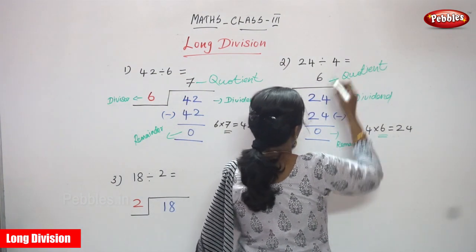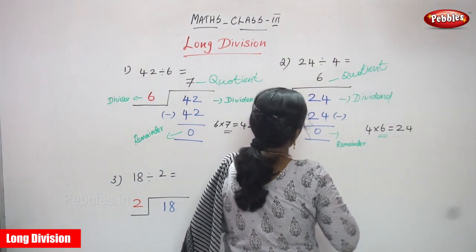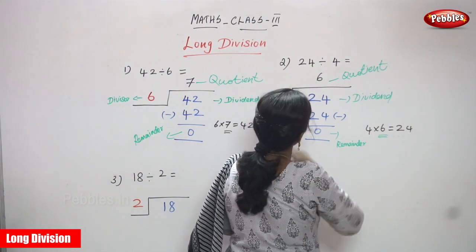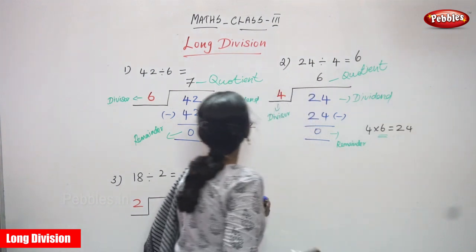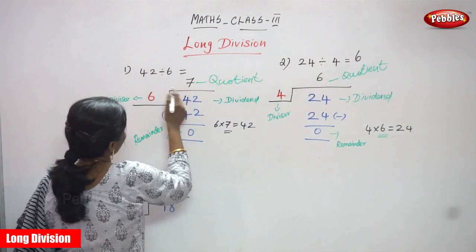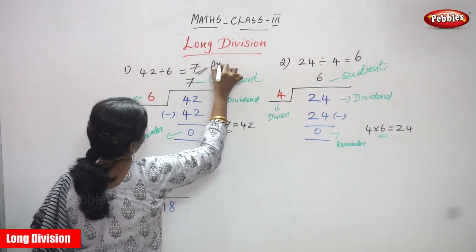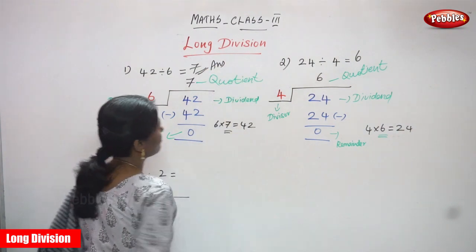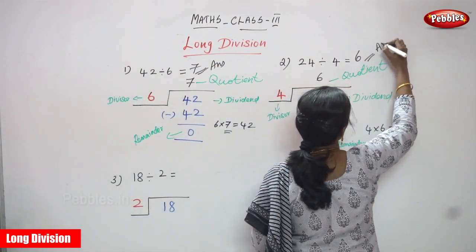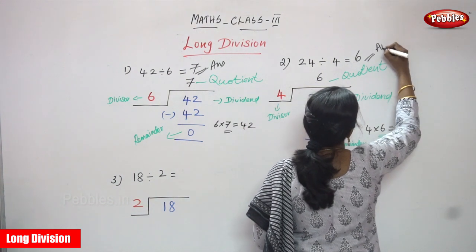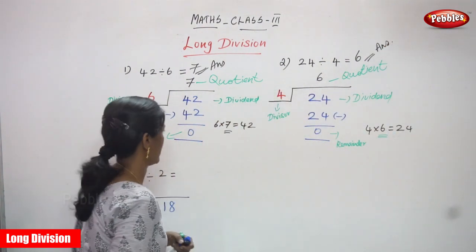So for this question 6 is the right answer. For 24 divided by 4 the answer is 6. And for 42 divided by 6 the answer is 7. First question answer is 7, second question answer is 6.